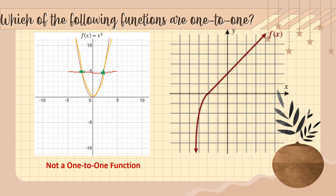For graph number two, I draw multiple horizontal lines at different positions. Each horizontal line hits the graph exactly once — whether drawn high, low, or in the middle, each line intersects the graph only once. Therefore, this is a one-to-one function.